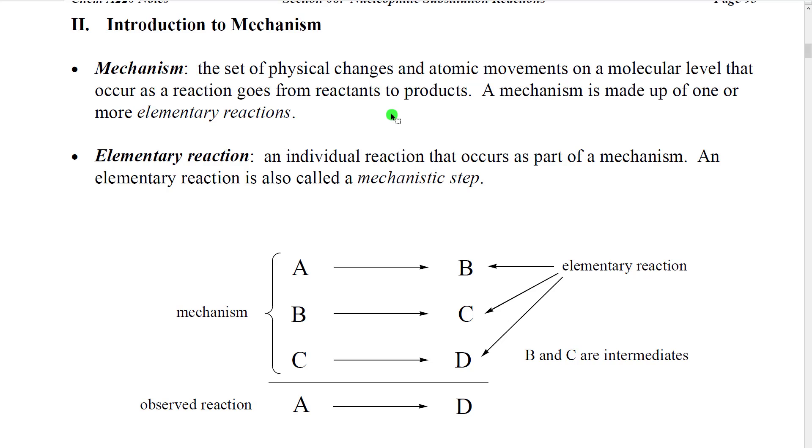Now, most mechanisms are actually very complicated. And in fact, mechanisms themselves for a given reaction often have many little reactions as a part of them. And we call those little reactions that add up or make the entire mechanism, we call those elementary reactions. So an elementary reaction is an individual reaction. It occurs as part of a mechanism. We also sometimes use the term mechanistic step. It's considered a step in the overall process.